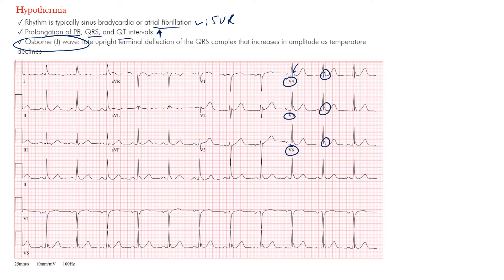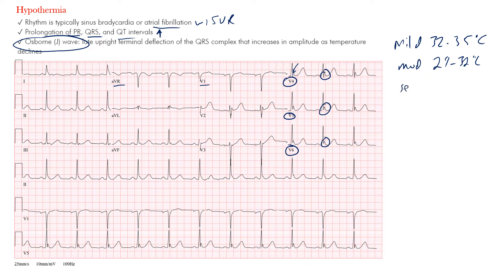Remember, it may be negative in AVR or V1, but otherwise it will be positive in the other leads. So this is hypothermia. The degree of how high those J waves get is based on how low the temperature gets. Mild hypothermia is between 32 and 35 degrees Celsius, moderate is between 29 and 32 degrees Celsius, and severe is less than 29 degrees Celsius. As the patient gets colder, you'll see an increase in J wave or Osborne wave amplitude. If a patient's temperature is around 36 degrees Celsius, you may not see this wave at all.